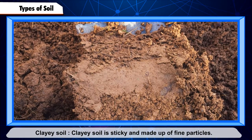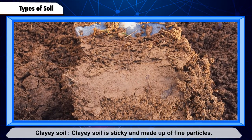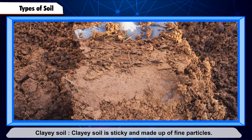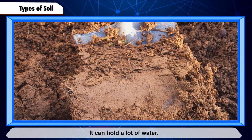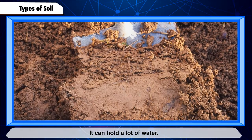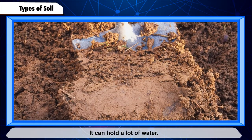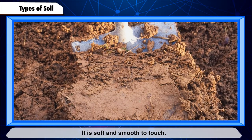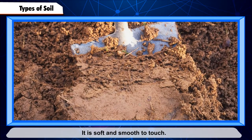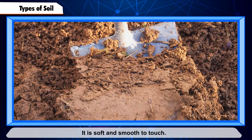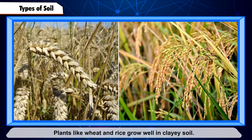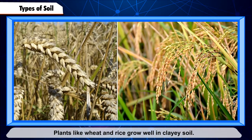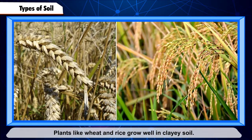Clayey soil: clayey soil is sticky and made up of fine particles. It can hold a lot of water. It is soft and smooth to touch. Plants like wheat and rice grow well in clayey soil.